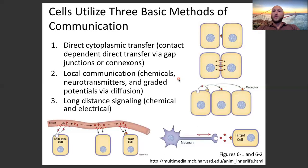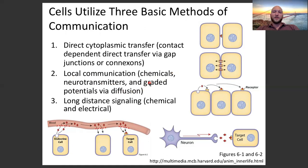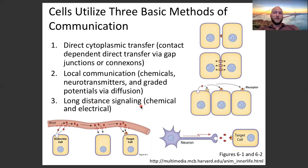Local communication involves cells talking to cells in their general area — chemicals diffusing to neighboring cells. These include neurotransmitters diffusing from the end of an axon onto the next cell across the synapse, and graded potentials, which we'll cover in the next lecture. Long-distance signaling is the third category, falling into two main types: chemical, which is basically hormones, and electrical, which is your nervous system.